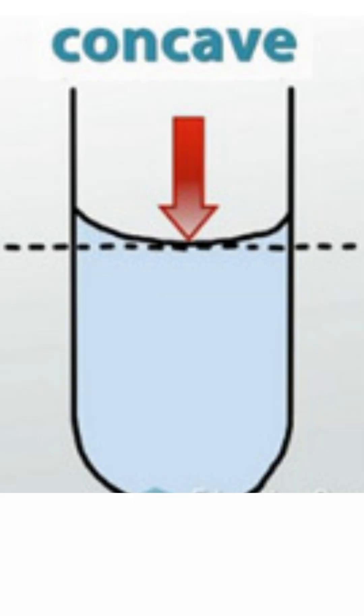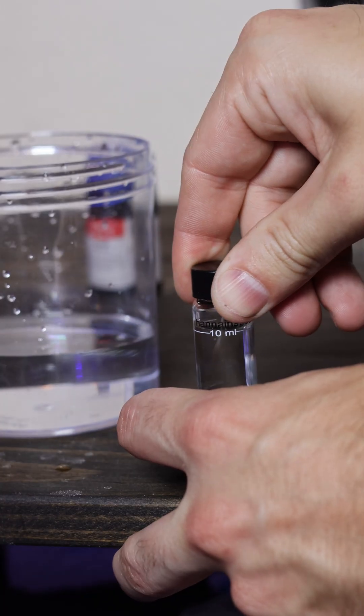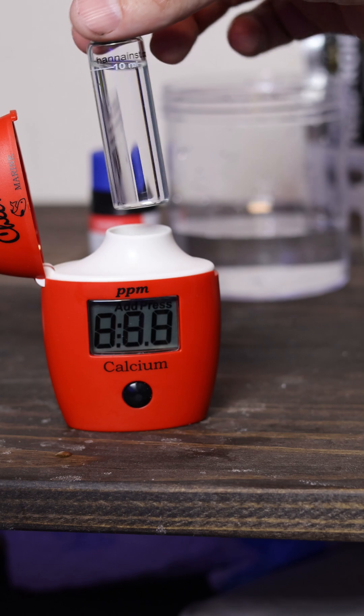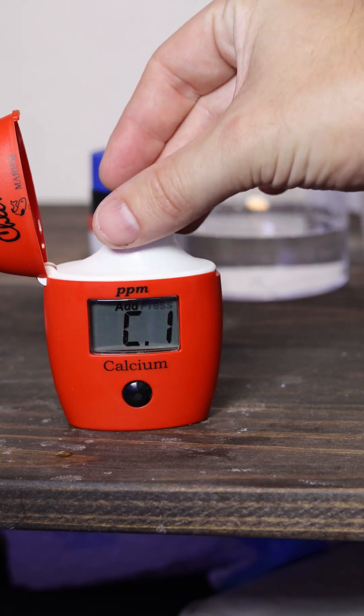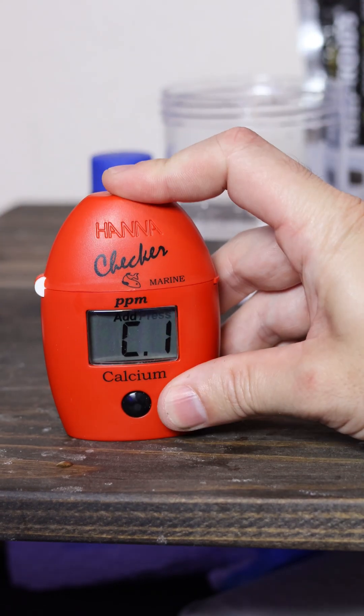This is how it should look inside of the test tube. Insert the cap and give it a shake and then make sure that you clean the test tube. Make sure the Hanna checker says C1, insert the test tube and then press the button.